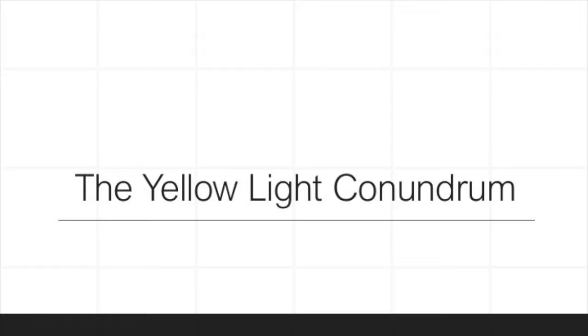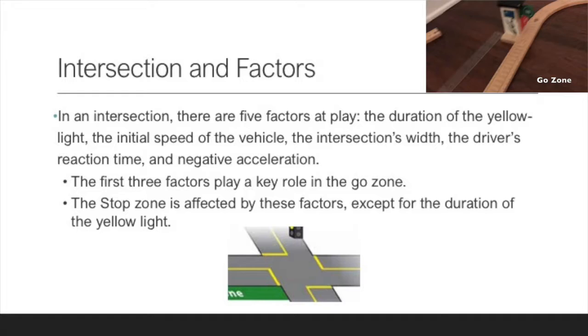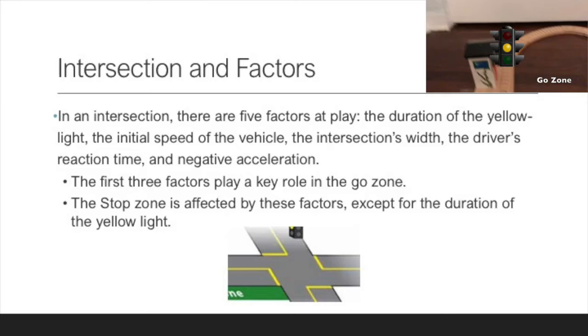The yellow light conundrum. In an intersection, there are five factors at play: the duration of the yellow light, the initial speed of the vehicle, the intersection's width, the driver's reaction time, and the negative acceleration.